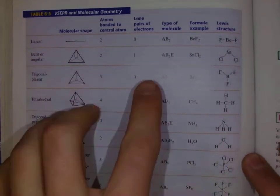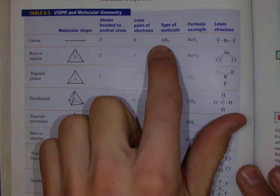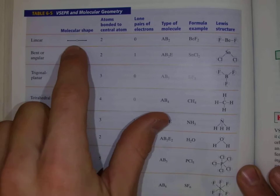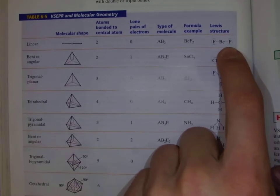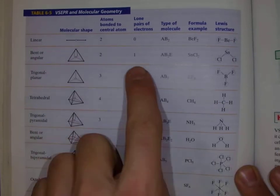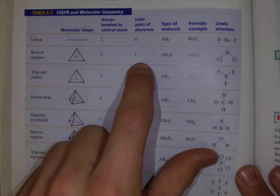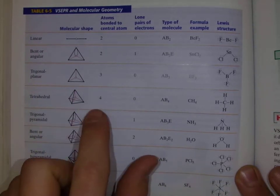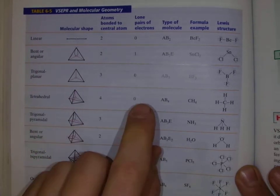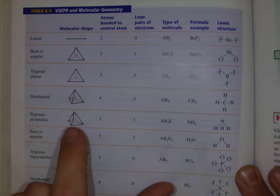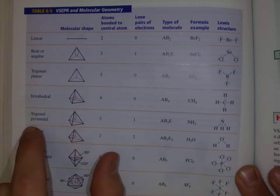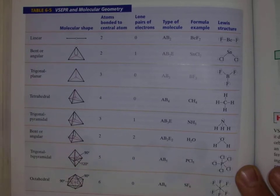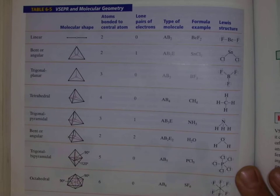If we have an AX2E0 structure — two atoms bonded, zero lone pairs — we're going to have a linear shape, like beryllium difluoride. AX2E1 gives a bent structure. AX3E0 is trigonal planar. AX4E0 is tetrahedral. AX3E1 is trigonal pyramidal. AX2E2 is bent or angular. All we're doing is reading this table. I will give you a table like this; the big thing you need to do is identify the AXE structure.